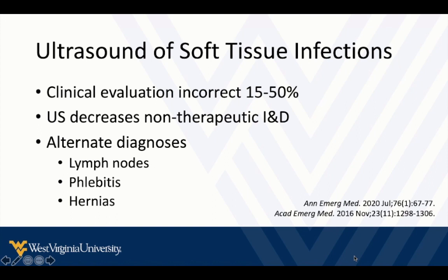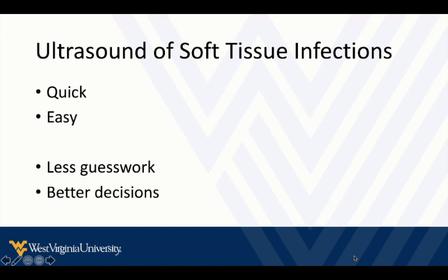There are also alternate diagnoses to consider: lymph nodes, phlebitis, hernia, or some other lesion. Ultrasound makes us more accurate at finding these and helps pick up things we probably wouldn't otherwise identify. It's quick, it's easy, takes a lot of guesswork out of your clinical practice, and you're just going to make better decisions if you incorporate this.